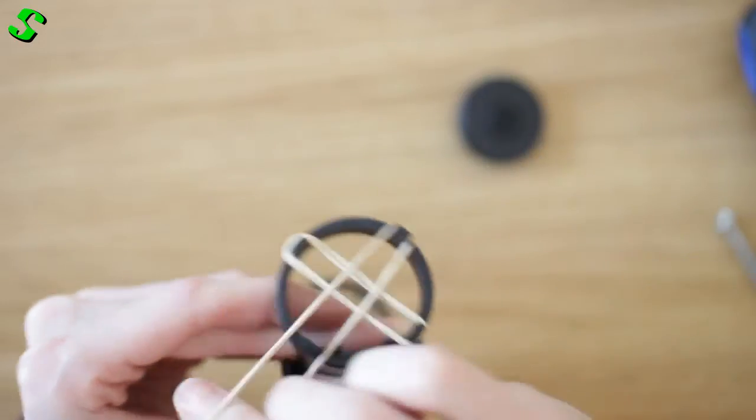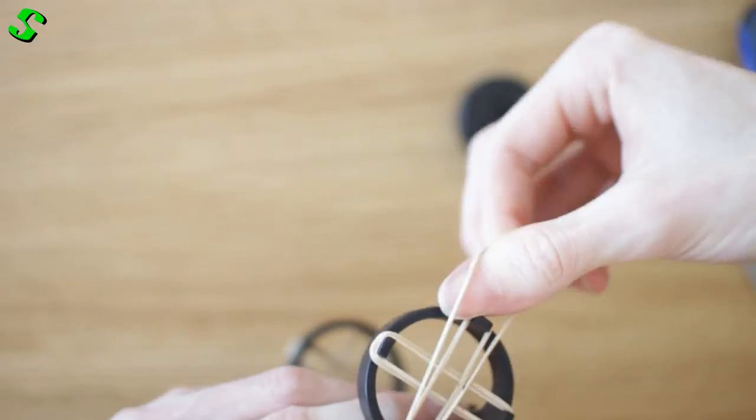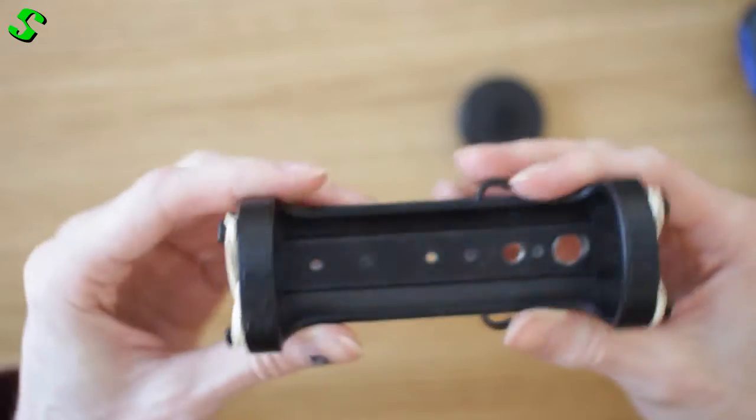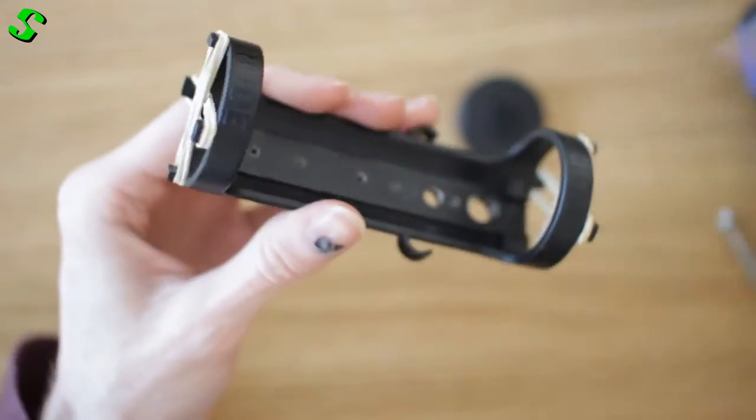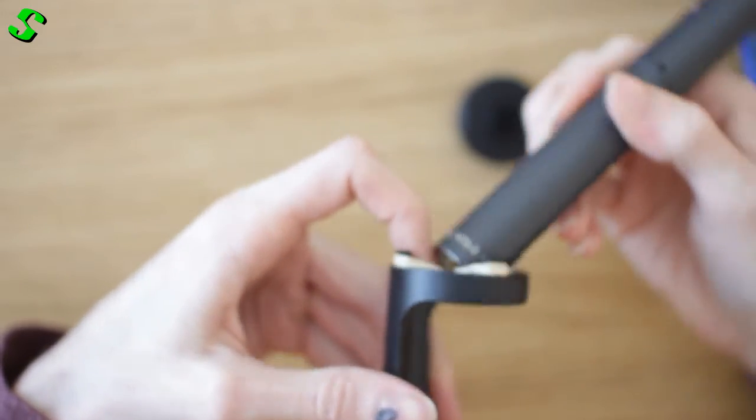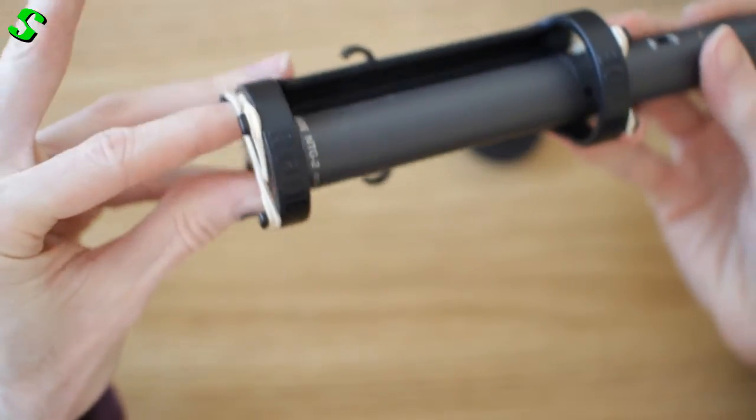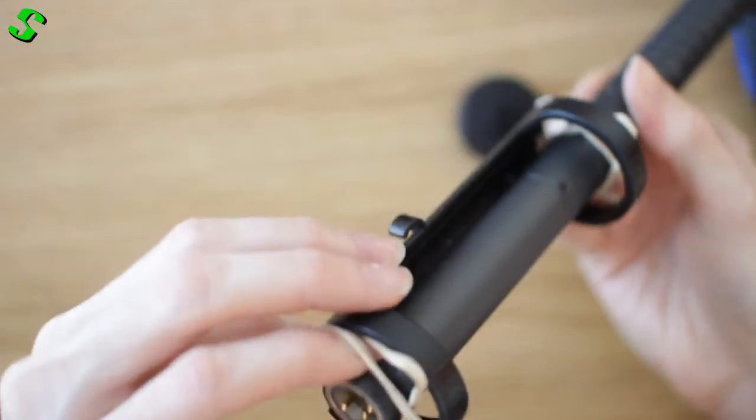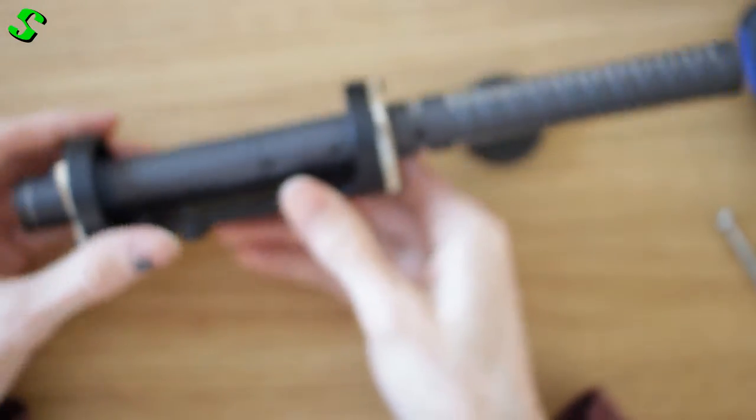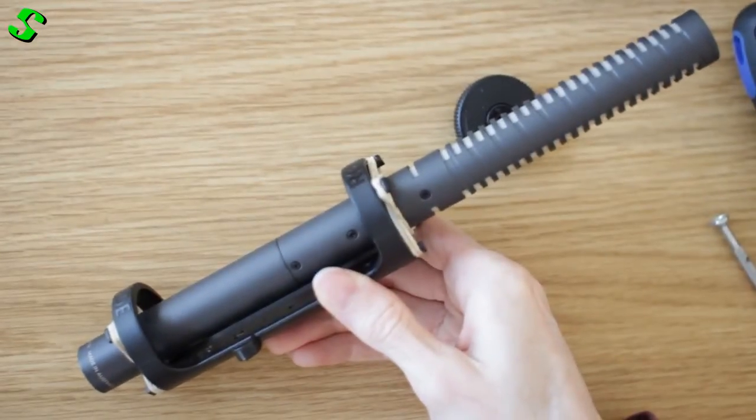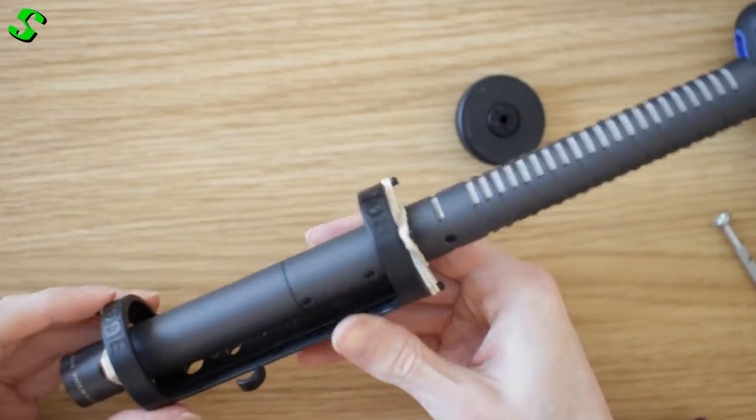Now as far as the shock mount for the NTG2, that is pretty much done. You pretty much just slot that in there, and there you have it. The shock mount is ready to go.